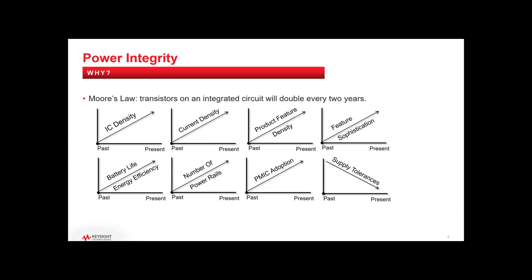The focus on PDN and power integrity is driven by Moore's law. We're enjoying the benefits of packing more transistors into a chip every couple of years — your smartphone is a clear example, with more features in a smaller space and better battery life. But this comes at a cost: as IC density increases, current density creates hotspots in the IC. Also, as speeds increase, we need to pay closer attention to power rails.